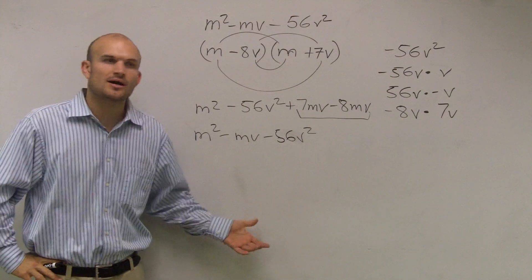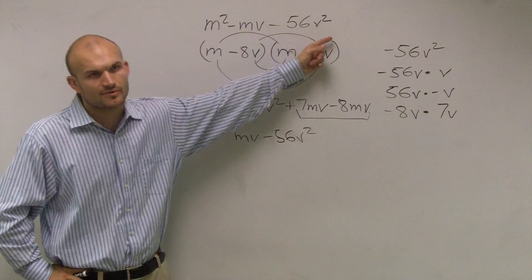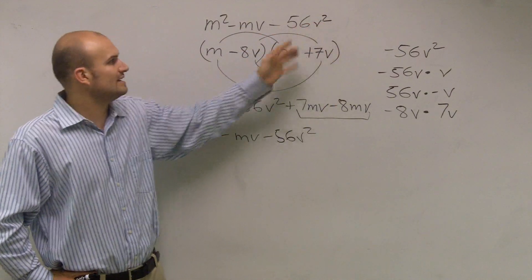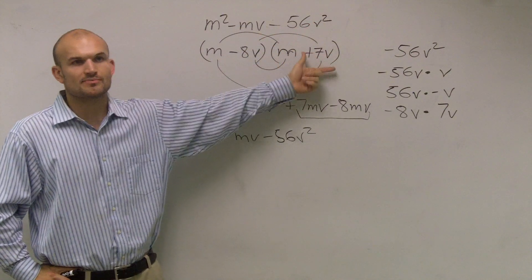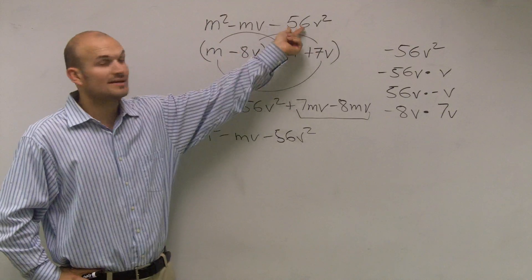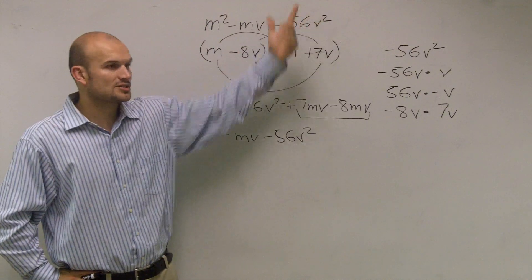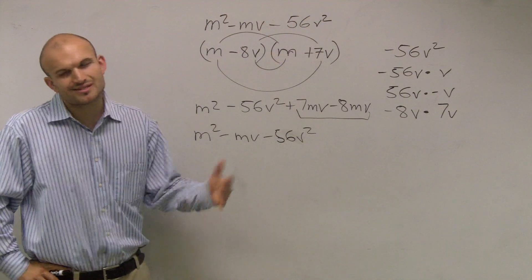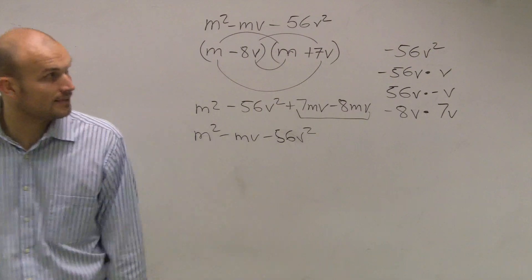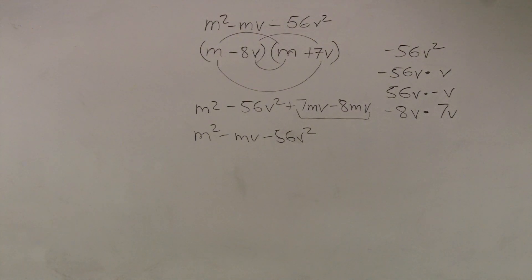So ladies and gentlemen, the difficult thing about this problem is, like I said, when you have this v squared, just attach the v's with your last two terms. Because those two are going to have to multiply, not only to give you your number, but also to give you your v squared. All right? So it's just a little alteration of the problems we've been working on. I know that's a little bit of confusion.